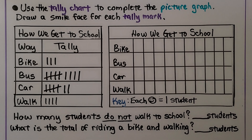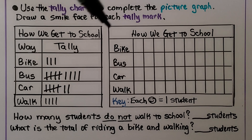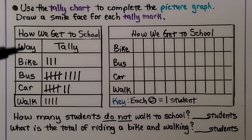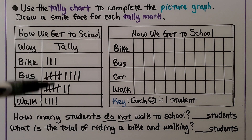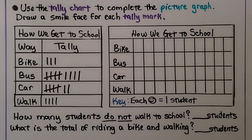Let's try one last one. Use the tally chart to complete the picture graph by drawing a smile face for each tally mark. Both the picture graph and tally chart share the title 'How We Get to School,' with categories bike, bus, car, and walk. Bike shows three tally marks, so we put three smile faces for bike in the picture graph.